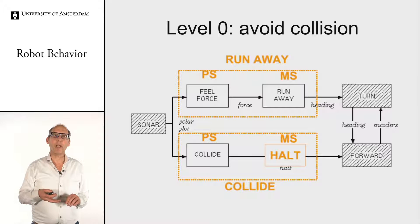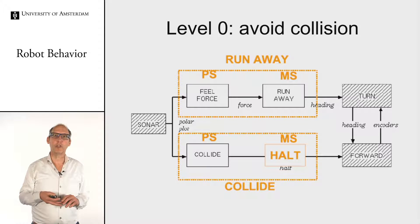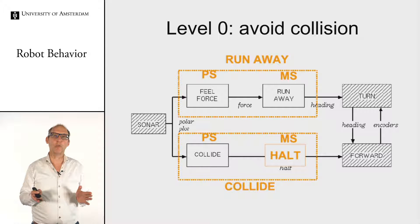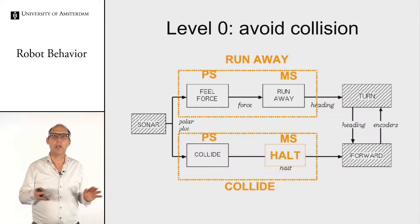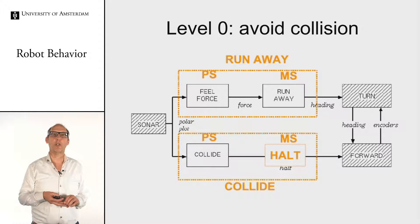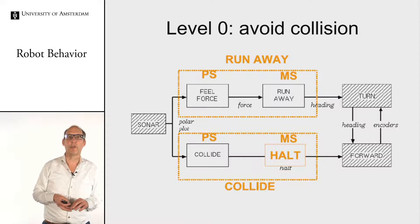On the other hand, if you sense objects in front of or to the side of you, the 'feel force' behavior turns the robot away from those obstacles. That means if you are standing still in front of an obstacle, you start turning, and once the collide pipeline detects nothing in front anymore, you start driving again.